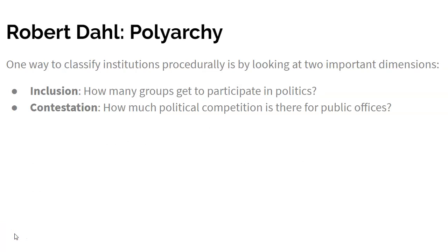One important and influential way of classifying institutions procedurally is by looking at two important dimensions: inclusion and contestation. Inclusion refers to how many groups get to participate in politics. When a country gives women the right to vote, it becomes more democratic. When it reduces barriers for minorities to vote, again it becomes more democratic. When it lowers the voting age from 21 to 18, as they did in the United States, it becomes more democratic because it becomes more inclusive.